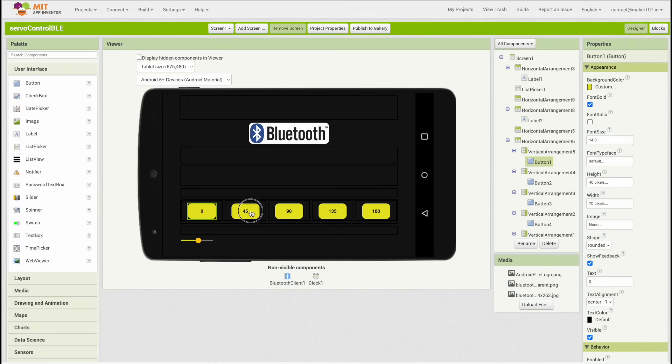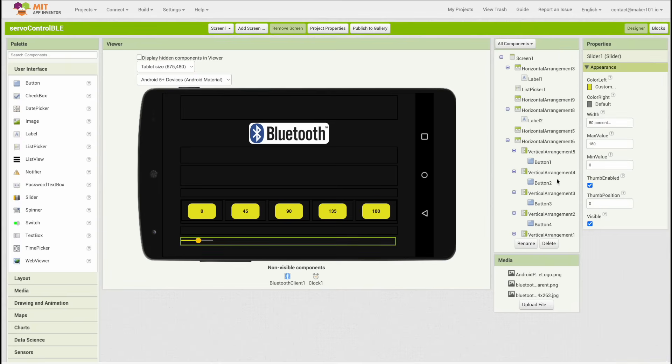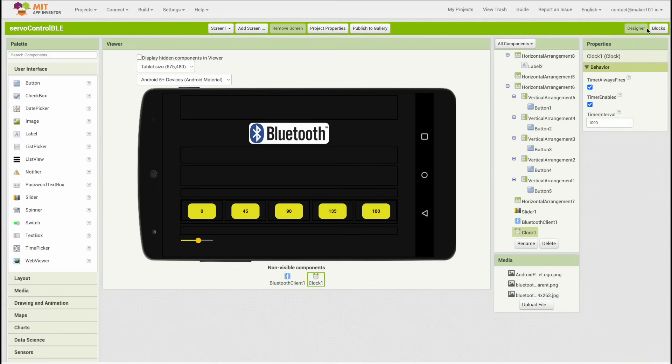The UI of the application includes a list of devices, five direction buttons, and a direction slider. In the back-end of the application, code blocks were created to list the devices, show the connection status, and communicate the positions of the slider and buttons.